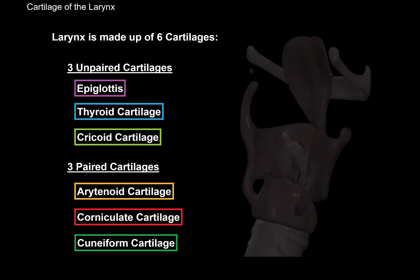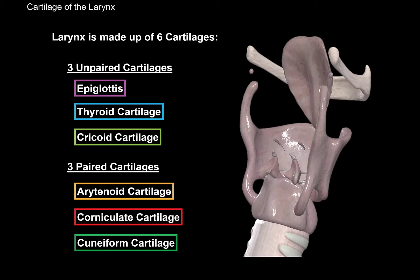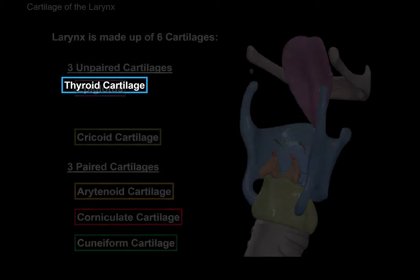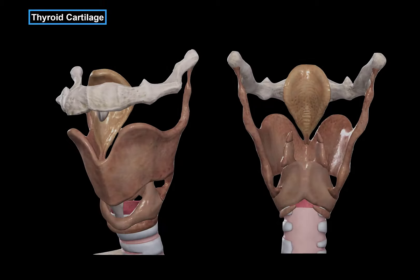Here is a more realistic depiction of the larynx. We have the epiglottis, the thyroid cartilage, and the cricoid cartilage. We have the arytenoid, the corniculate, and the cuneiform cartilages. Let's now cover each of these cartilages in detail and look at their characteristics. We'll start with the thyroid cartilage.